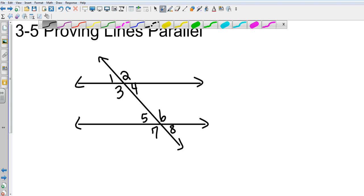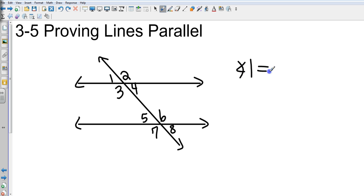You're going to get some statements today that look something like this. The book might say angle 1 is congruent to angle 5. Is that enough information to prove, and let's call this line a and line b...